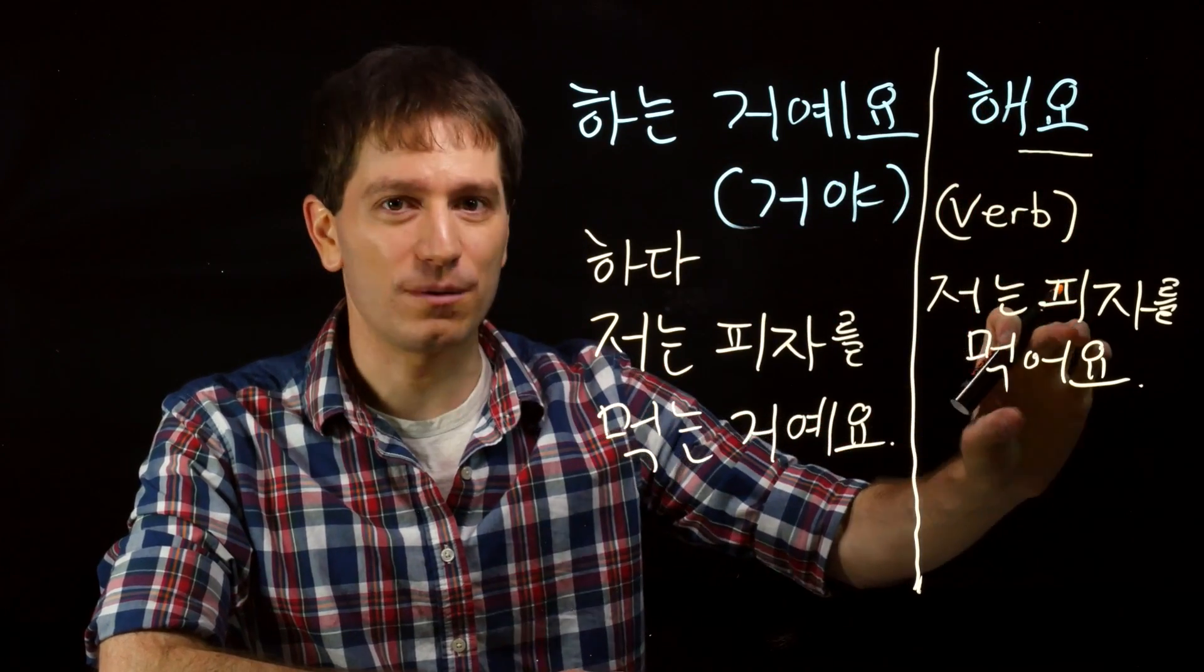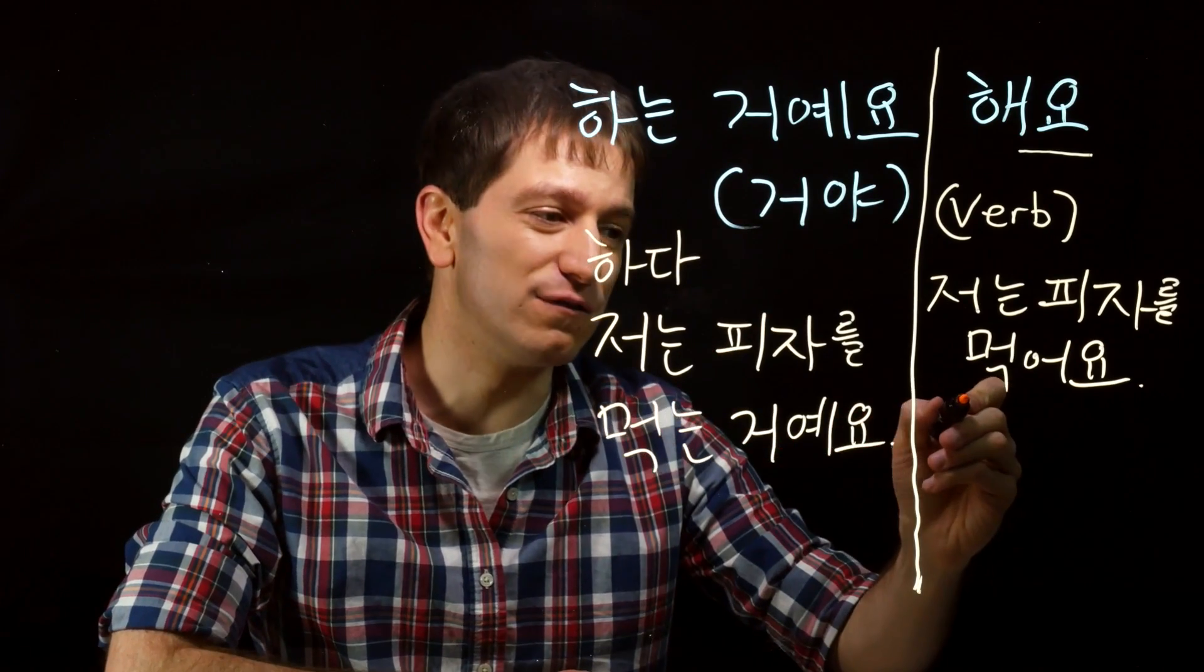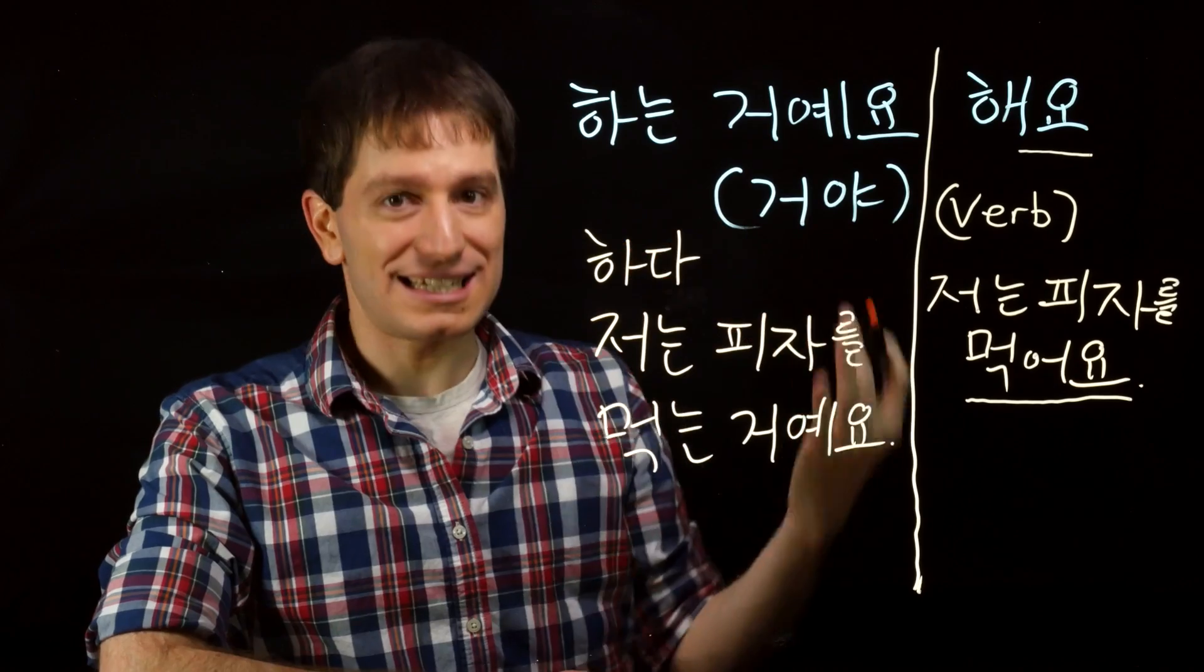Their nuance is slightly different. So using just the 요 form, or 봐, if you're speaking casually, slightly emphasizes the verb. So it slightly would sound like this: I eat pizza.